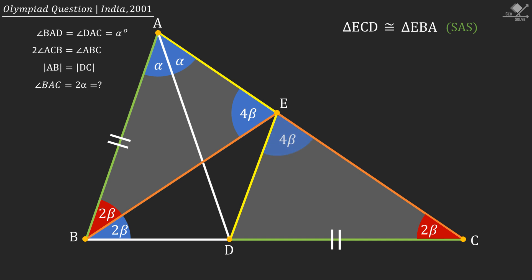So angle DEC will also be 4β degrees. Also, angles corresponding to the orange line segments will be equal, and angle EDC will be 2α degrees.